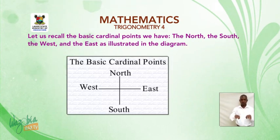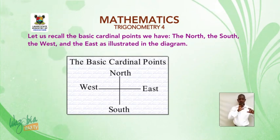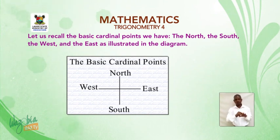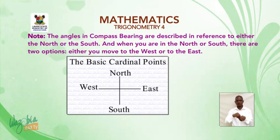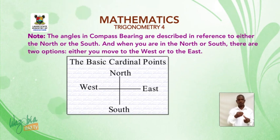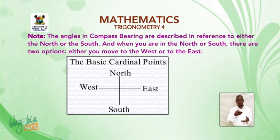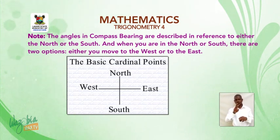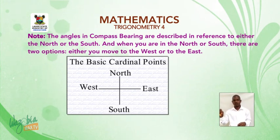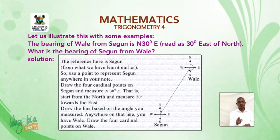Let's recall the basic cardinal points that we have. We have the north, the south, the west, and the east as shown in the diagram. Please note that the angles in compass bearing are described in reference to either the north or the south. And when you are at the north or south, there are two options: either you move to the west side or you move to the east side. Let's illustrate this with some examples.